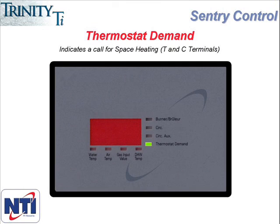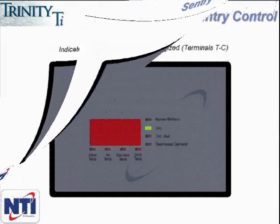The first indicator we are going to look at is thermostat demand. This light comes on each time the boiler receives a call for heat. In other words, whenever the terminals T and C on the terminal strip up at the top of the boiler are closed, the boiler receives a call for heat and the thermostat demand indicator light comes on.